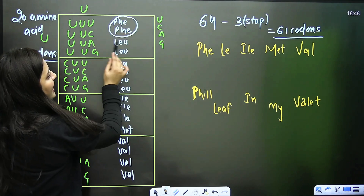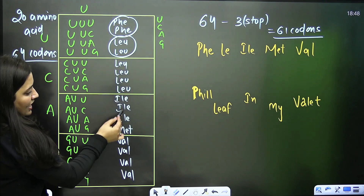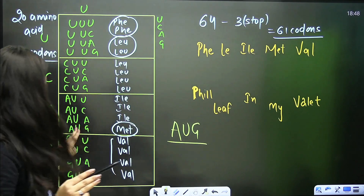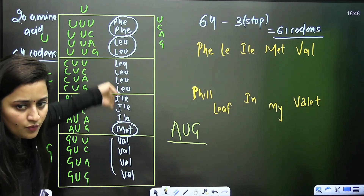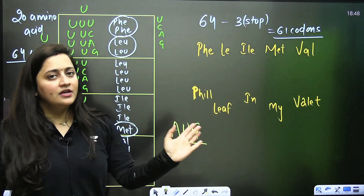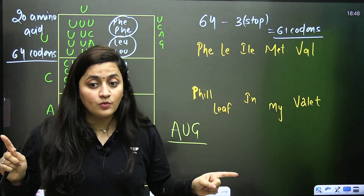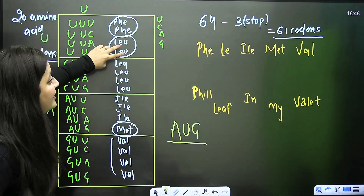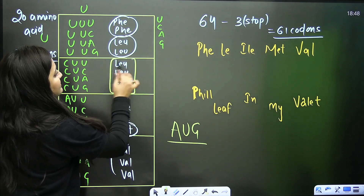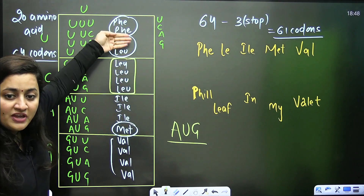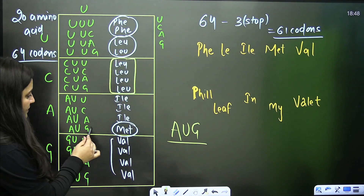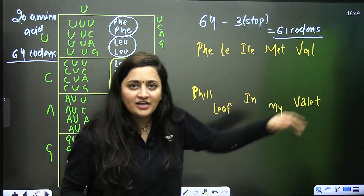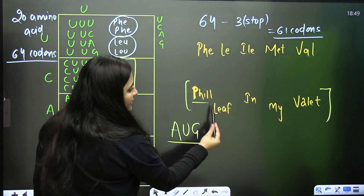For the first column, the trick is: 'Philly Elee Met Well.' Phe = phenylalanine, Lee = leucine (leucine has the maximum — six codons), Ile = isoleucine, Met = methionine (AUG is the start codon, it codes for methionine), and Val = valine. So remember: Philly Elee Met Well — phenylalanine, leucine, leucine, isoleucine, methionine, valine. You can also remember it as 'Phil Leaf In My Wallet.'